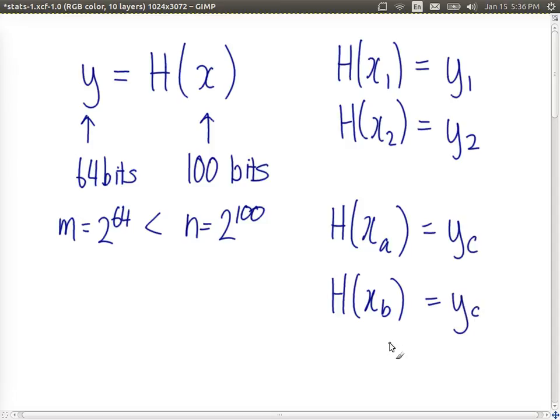In hash functions that's called a collision. So we cannot avoid collisions when the number of inputs is larger than the number of possible hash values.